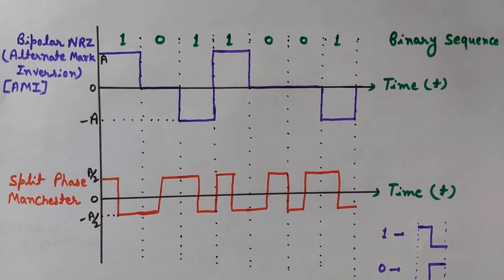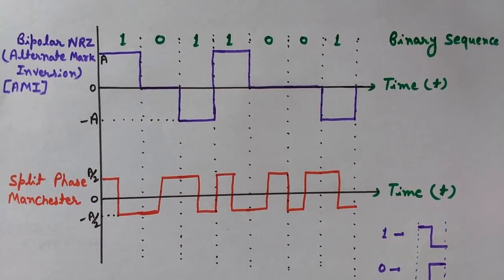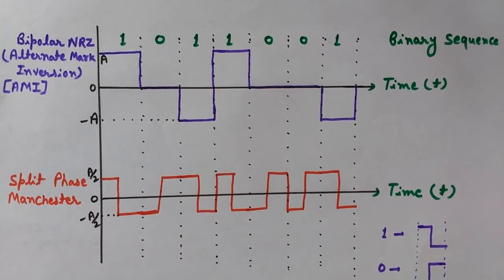An important advantage of the AMI format is that ambiguities due to transmission sign inversion are removed and eliminated. Also, if there are an even number of ones, the DC component of the waveform would be zero, since equal numbers of +A and -A amplitudes cancel each other out.